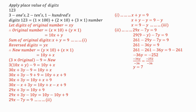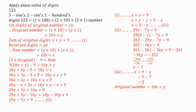Our Y equals 7. From Equation 3, X equals 9 minus Y, so substituting Y we get X equals 2. We've been asked to find the original number. The original number is 10X plus Y, so substituting the values of X and Y, the original number is 10 times 2 plus 7, which equals 27.